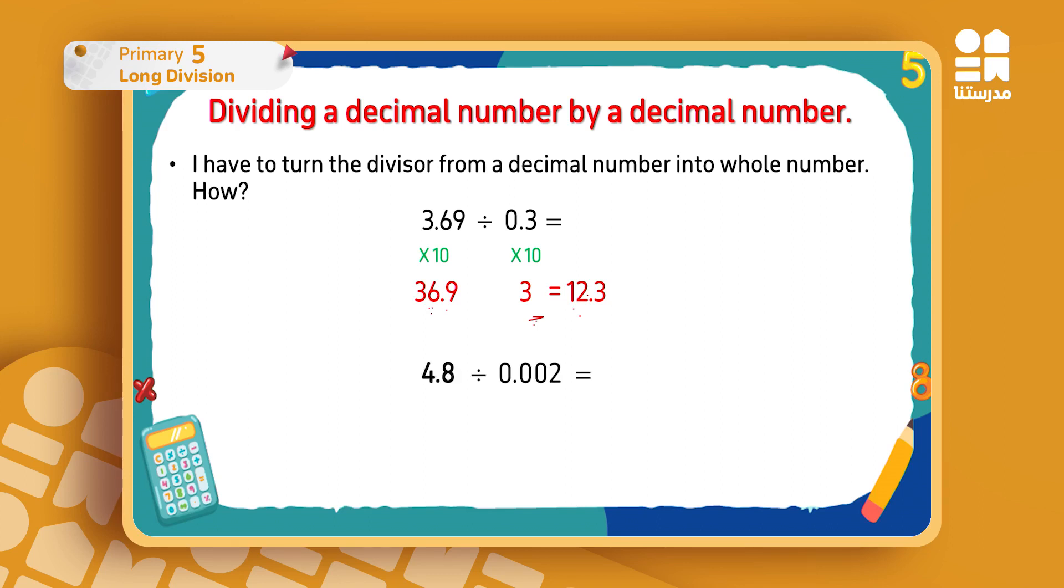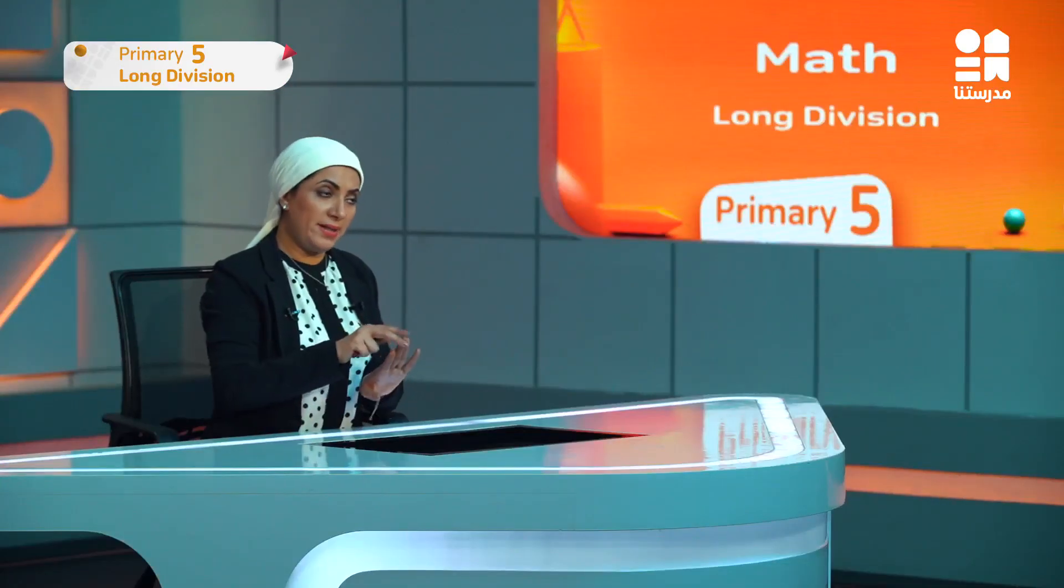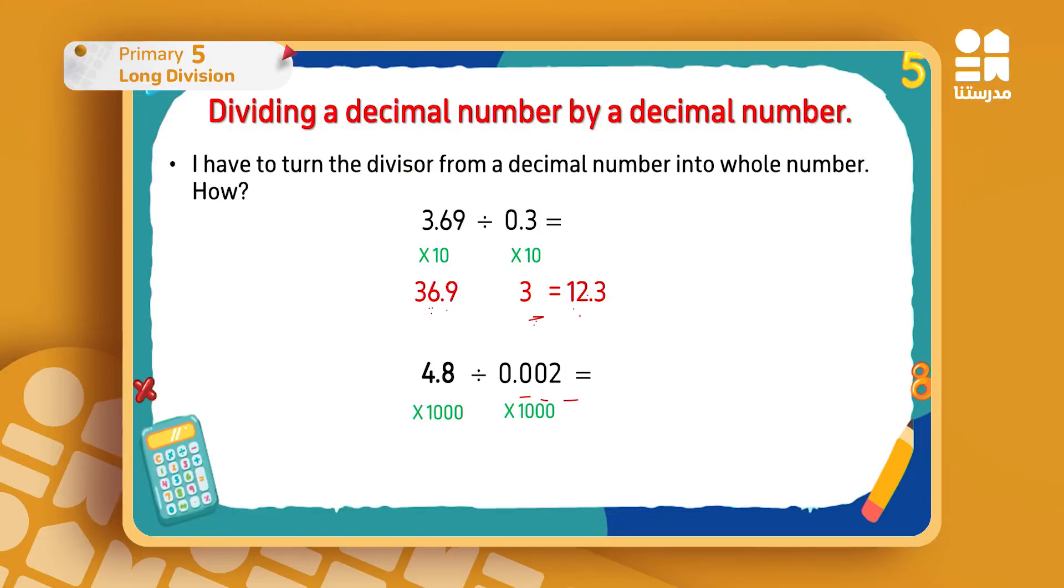Let's move to another example. 4.8 divided by 0.002. The divisor here is a bit bigger. How do I remove the decimal point? How many digits do I have after the decimal point? I have three digits after the decimal point. So will I use times 10, times 100, or times 1000? Times 1000, because it's the only one that has three zeros, so it will let me move the decimal point three places. So here, times 1000 for each one of them. I multiply them. 4.8: first I'll remove the decimal point with one of the zeros in 1000. I have 2 zeros left, so it becomes 4800 because I'll add the two zeros after removing the decimal point with one of the zeros.